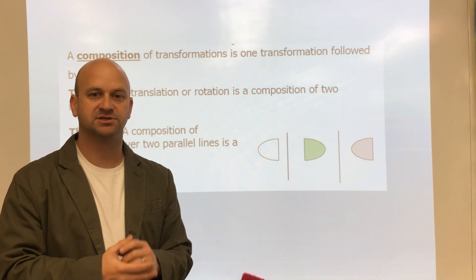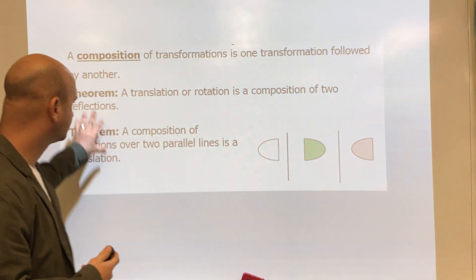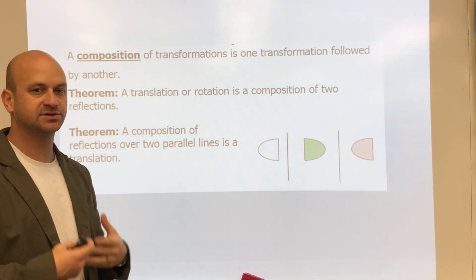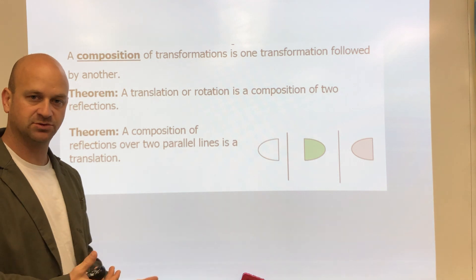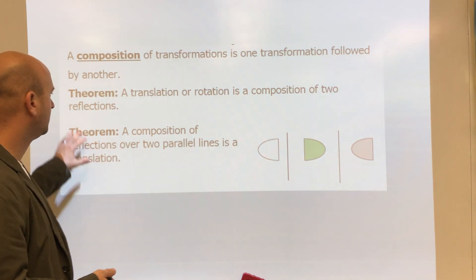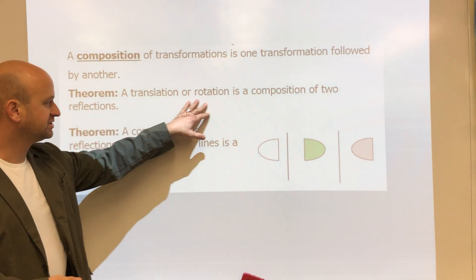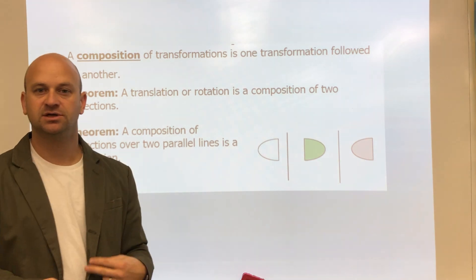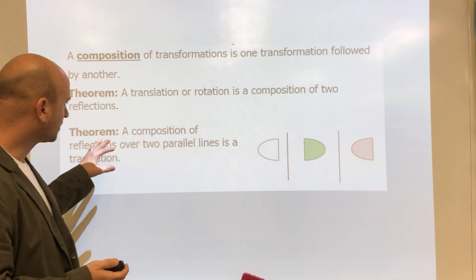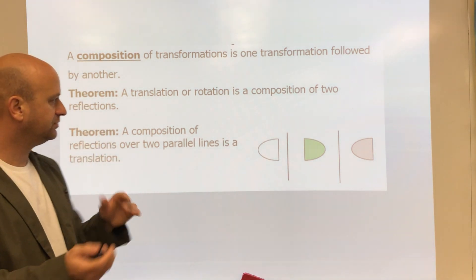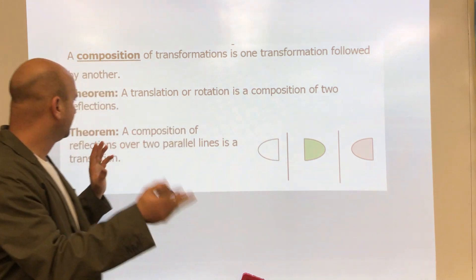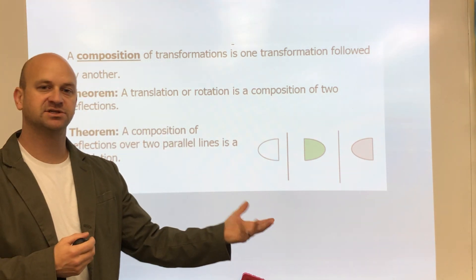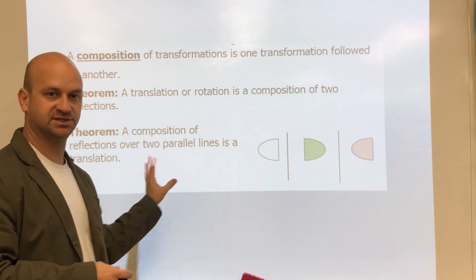There are many combinations we can do. There are a couple of theorems here which are essentially vocabulary, so these are things you want to make sure you know. One is that a translation or rotation is a composition of two reflections — so if you reflect something twice, that could be a translation or a rotation.